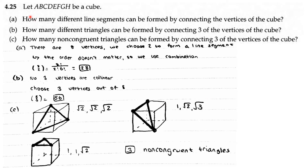AOPs Counting and Probability 4.25. Let ABCDEFGH be a cube. Part A: How many different line segments can be formed by connecting the vertices of the cube? There are 8 vertices and we have to choose 2 to form a line segment. Since order doesn't matter, we use combinations: 8 choose 2, which equals 28 different line segments.